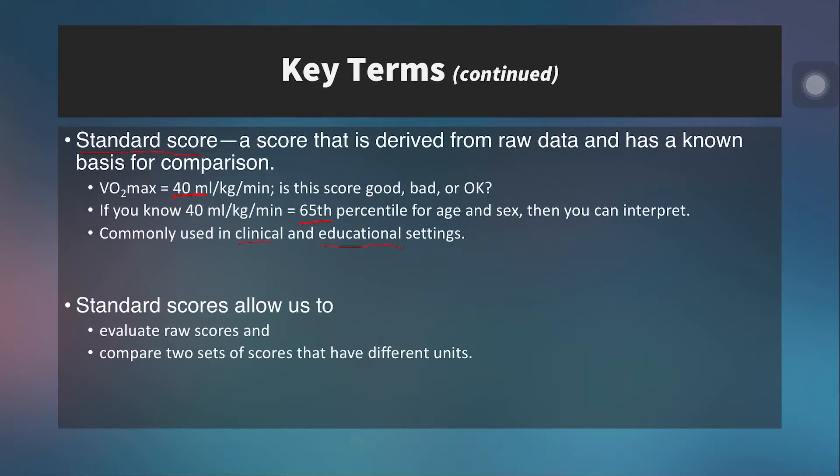Standard scores allow us to evaluate raw scores and to compare two sets of scores that have different units. For example, vertical jumps and horizontal jumps have the same units, although you'll jump farther than you jump high. But if you're comparing vertical jump to your back squat 1RM, you would first convert them into percentiles so you can see where you line up in the percentile for each measure.